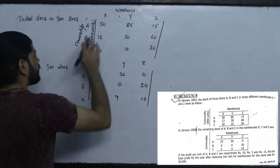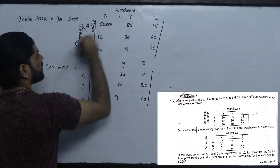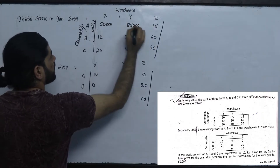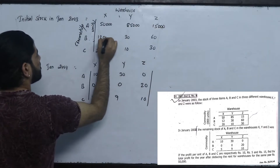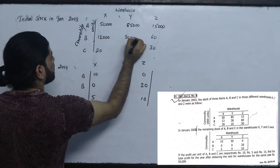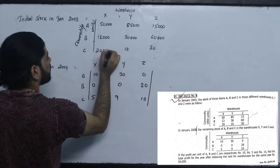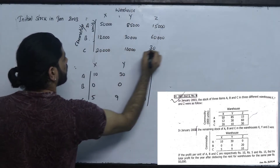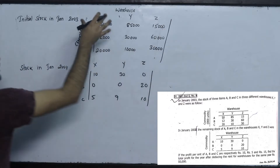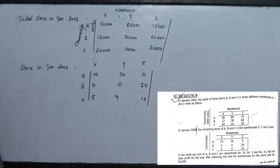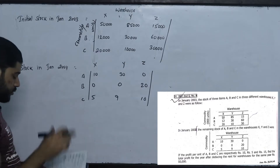What do we do? Now we solve this. This is 0, 0. This is 85,000. And this is 15,000. This is 12,000. This is 30,000. This is 60,000. This is 20,000. This is 10,000. This is 30,000. This is the 1,000 range. This is the 10,000 range. Now we start with the question.